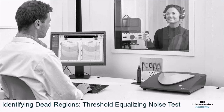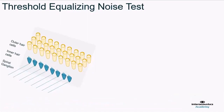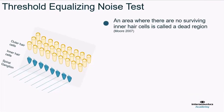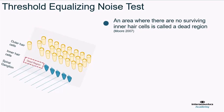With the threshold equalising noise test, the main reason for doing it is to identify dead regions. A dead region is an area where there's no surviving inner hair cells in the cochlea — this was first described by Moore back in 2007. The assumption is that outer hair cells are the most commonly damaged and the main cause of sensorineural hearing loss, but on occasions people can also have inner hair cell loss. When there's inner hair cell loss, this is known as a dead region.